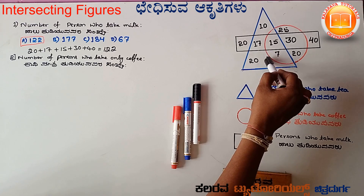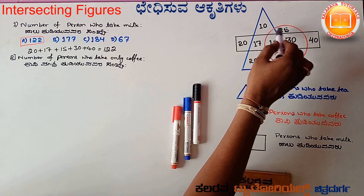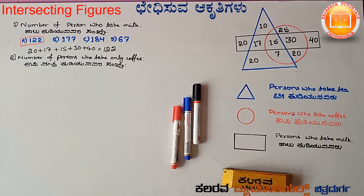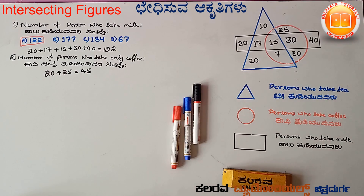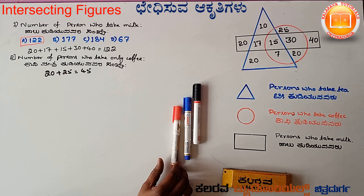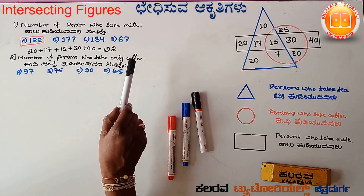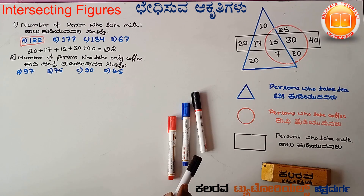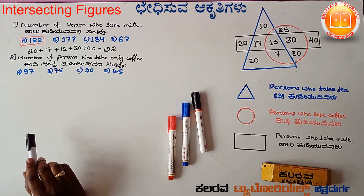Here the relevant numbers are 7, 18, 18, and 15. But in our count, these are very different names. The number of persons who take only coffee — counting only those numbers exclusively inside the coffee region.